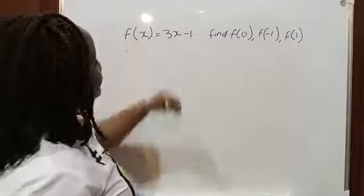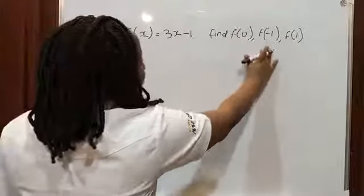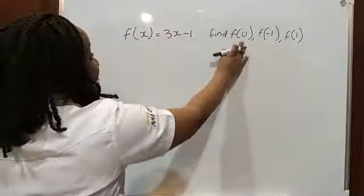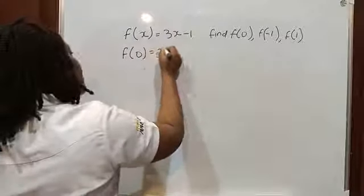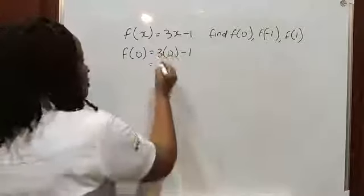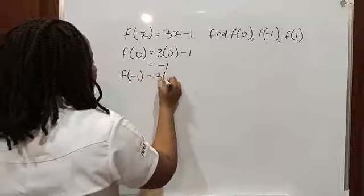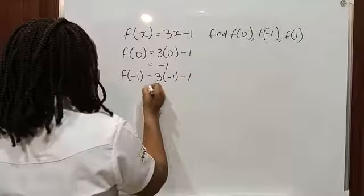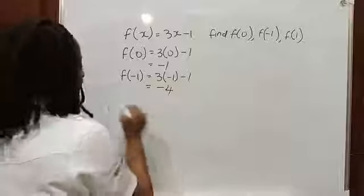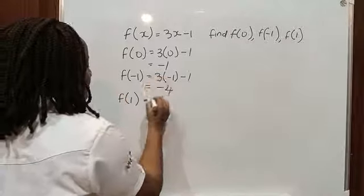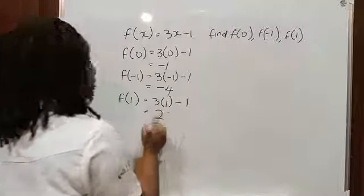Let's take for example f(x) = 3x − 1. Find f(0), f(−1), and f(1). All you have to do is replace the values of x. So f(0) = 3(0) − 1 = 0 − 1 = −1. f(−1) = 3(−1) − 1 = −3 − 1 = −4. And f(1) = 3(1) − 1 = 3 − 1 = 2.